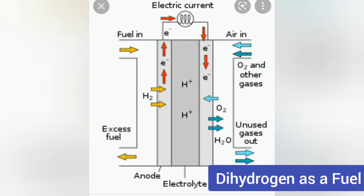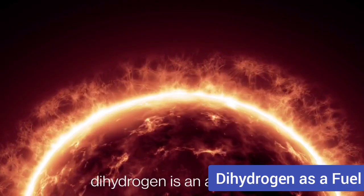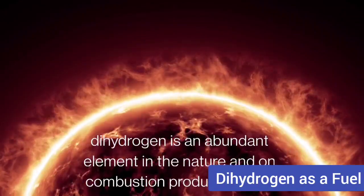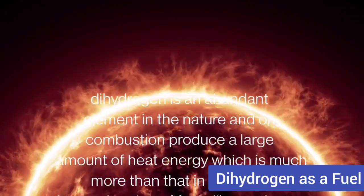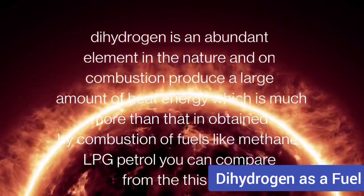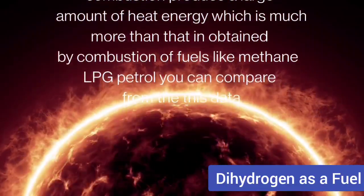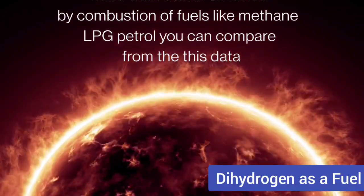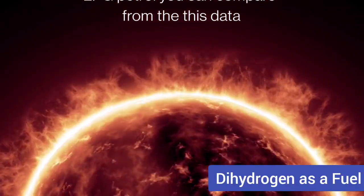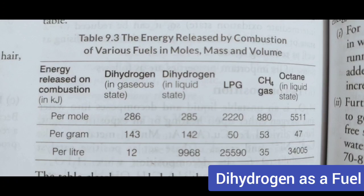In this video we will discuss dihydrogen as a fuel and the hydrogen economy. Dihydrogen is an abundant element in nature and on combustion produces a large amount of heat energy, which is much more than that obtained in the combustion of fuels like methane, LPG, and petrol. You can compare this from the following data, where in the per gram column, dihydrogen is three times a more efficient fuel.